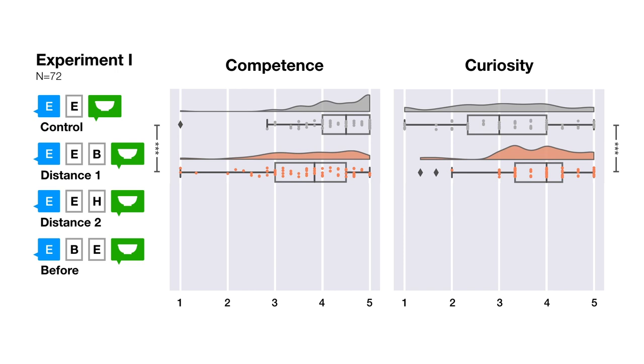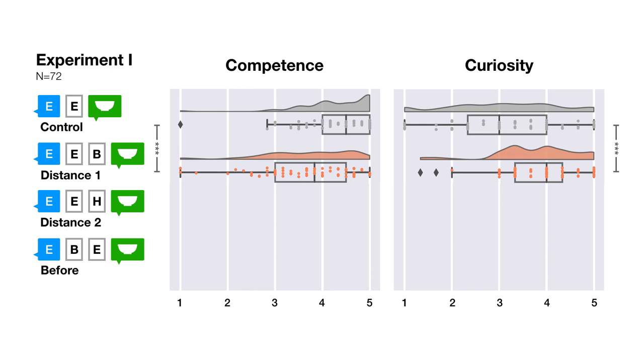The robot that took the detour on the way back was perceived as more curious and less competent. And this trend held for the detour to the distant box, and for the detour that happened before checking the goal box.